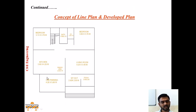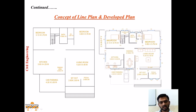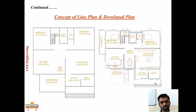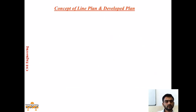Here you can see another example. This is the tentative line plan drawn as per the aspirations of the client. On confirmation, a developed plan is drawn where all wall thicknesses - external and internal - are considered. Various furniture requirements are placed, openings such as ventilators, doors, and windows are provided, and staircase is included as per the requirement. This is the basic difference between line plan and developed plan.